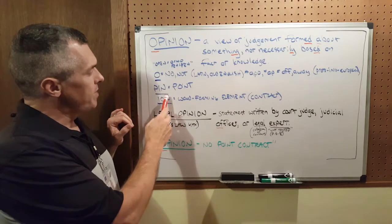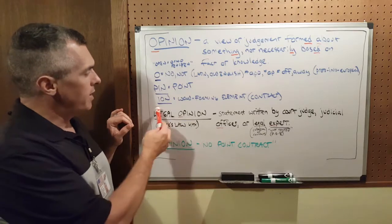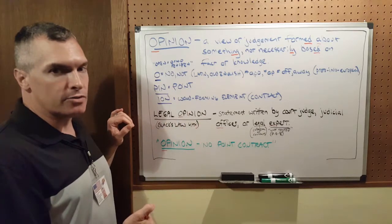Next, I parsed the word PIN, and I found it to mean point. And then ION, which is a word forming element, meaning contract.